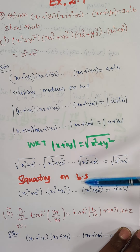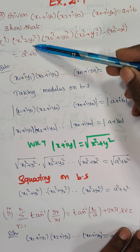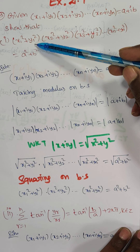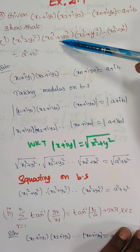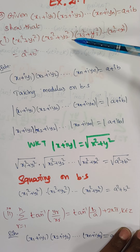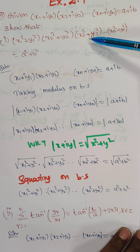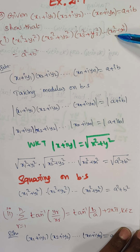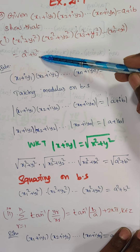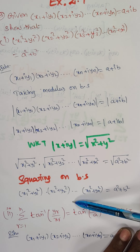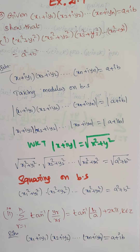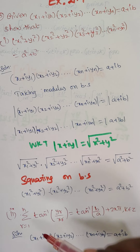This is the proof for the first substitution: x1² + y1², x2² + y2², x3² + y3², ..., xn² + yn² = a² + b². This completes the first proof. Now moving on to the second one.